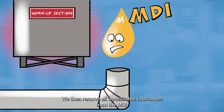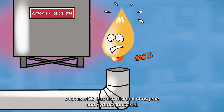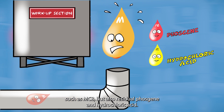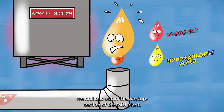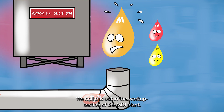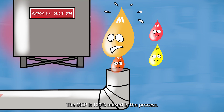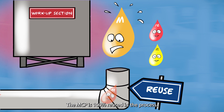We then remove all undesirable substances from the MDI, such as MCB, but also residual phosgene and hydrochloric acid. We boil this out in the workup section of the MDI plant. The MCB is 100% reused in the process.